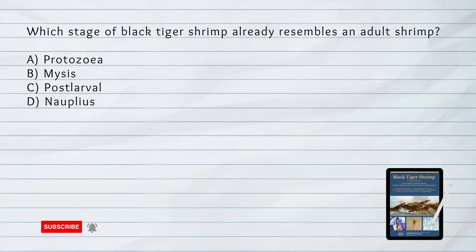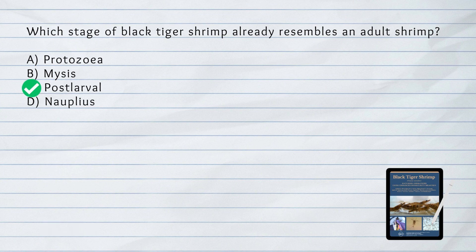Which stage of black tiger shrimp already resembles an adult shrimp? A. Protozoea. B. Mysis. C. Postlarval.